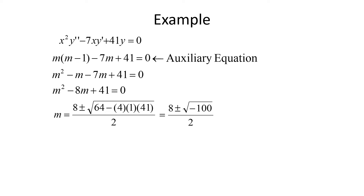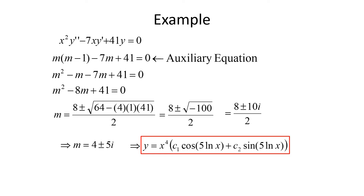The square root of -100 gives 10i, so m = (8 ± 10i) / 2 = 4 ± 5i. These are complex conjugate roots with α = 4 and β = 5. The solution is y = x^4 [c1 cos(5 ln x) + c2 sin(5 ln x)].